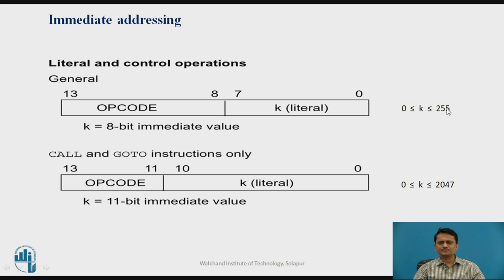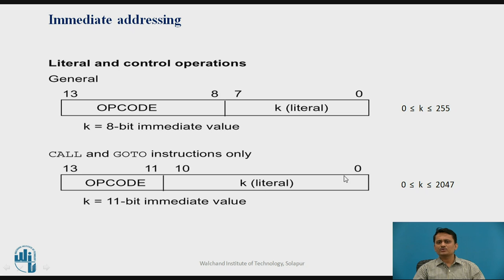For general instructions, that operand is an 8-bit literal value, so k can take values from 0 to 255. Or there are instructions like CALL and GOTO — in these two types of instructions, the address you are specifying is an 11-bit value available in the instruction itself, so k will range from 0 to 2047 (2 raised to 11). This is immediate addressing, where the operand is found in the instruction itself.